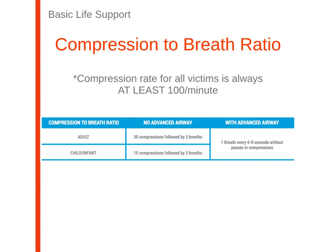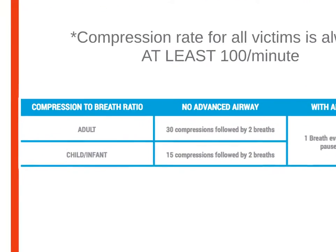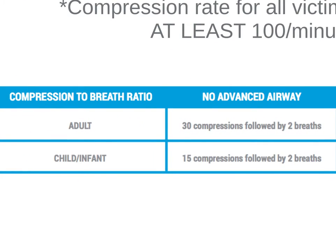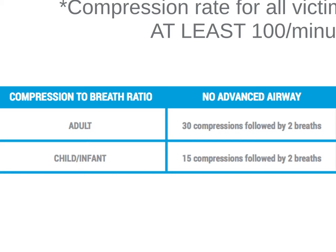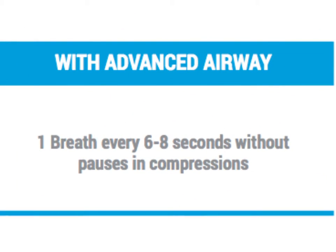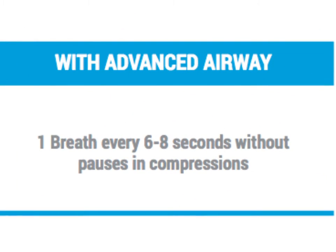When there is an advanced airway in place, the compression-to-breath ratio must be adjusted. We learned the compression-to-breath ratio for both adults and children in earlier chapters. Now we see that when an advanced airway is in place, both children and adults must receive one breath every six to eight seconds without pauses in compressions.